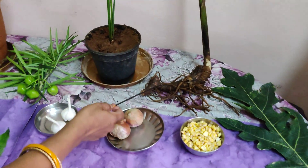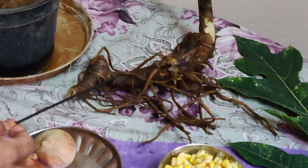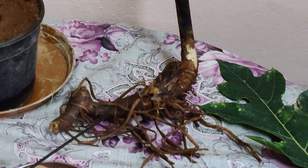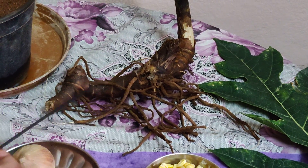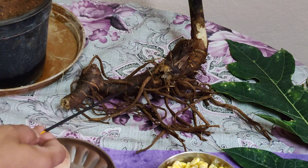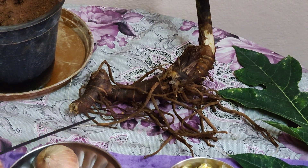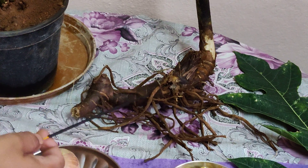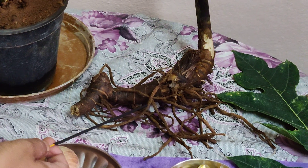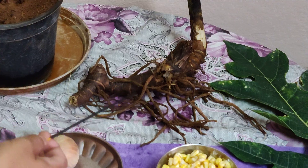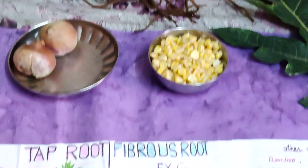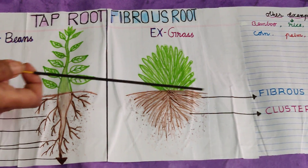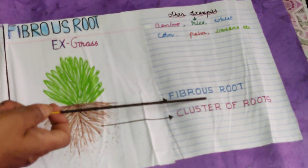Now let us look into the fibrous root system. In the fibrous root system, you can see all the roots are coming from the same level — they are delicate, slender, and of equal size. There is no mother root here, so all roots are coming like a cluster. They are very much like fibers, that is why the name fibrous root.